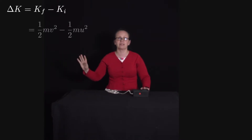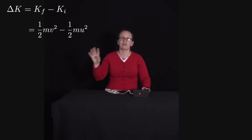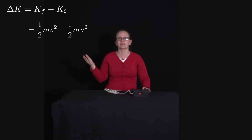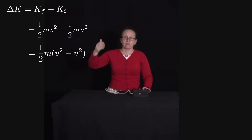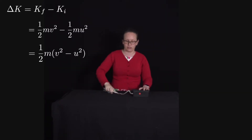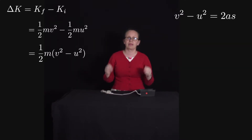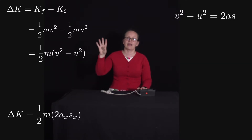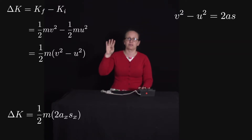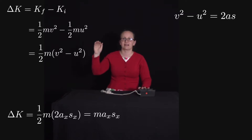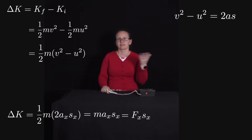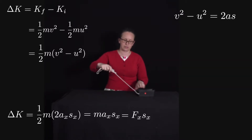The final kinetic energy is one-half mV squared, and the initial is one-half mU squared. Taking one-half m as a common factor gives one-half m times (V squared minus U squared). From our kinematic equations under constant acceleration, V squared minus U squared equals 2A_x S_x. Substituting gives one-half m times 2A_x S_x, which simplifies to m times A_x times S_x. Since m times A_x equals F_x, the force in the X direction, we get F_x times S_x.